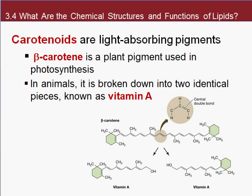The next category of lipids are the carotenoids. These are light-absorbing pigments. An example is beta-carotene — you may have heard of beta-carotene from carrots, which gives them their orange coloration. Animals that eat beta-carotene break it down into vitamin A. Vitamins are important in general because they're considered coenzymes, meaning they help our enzymes work properly.